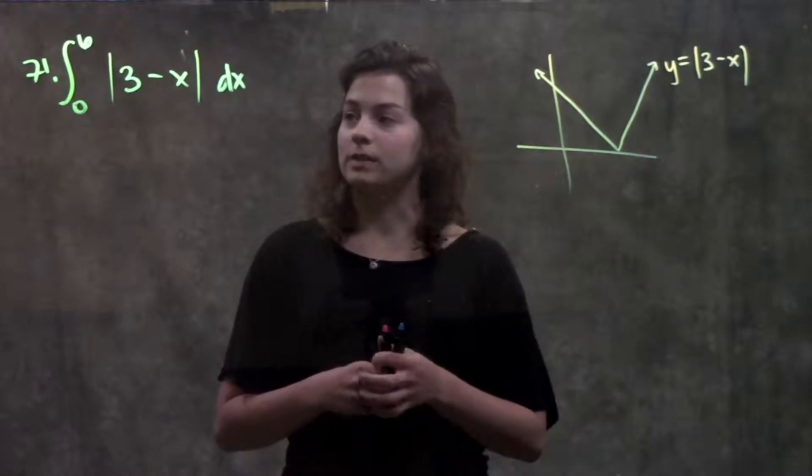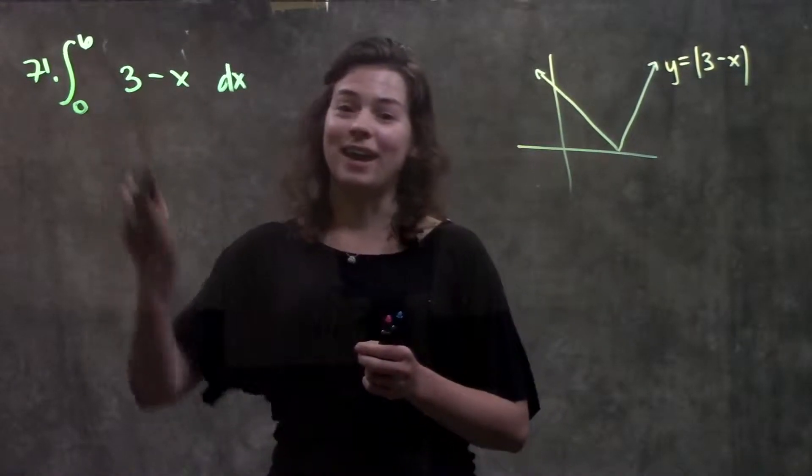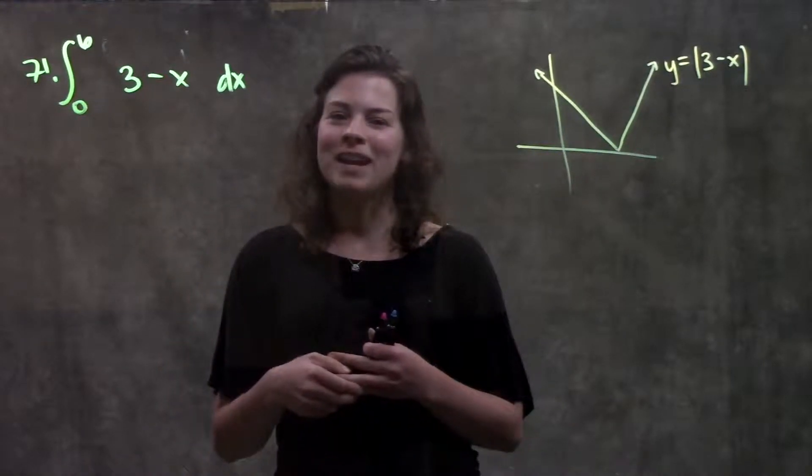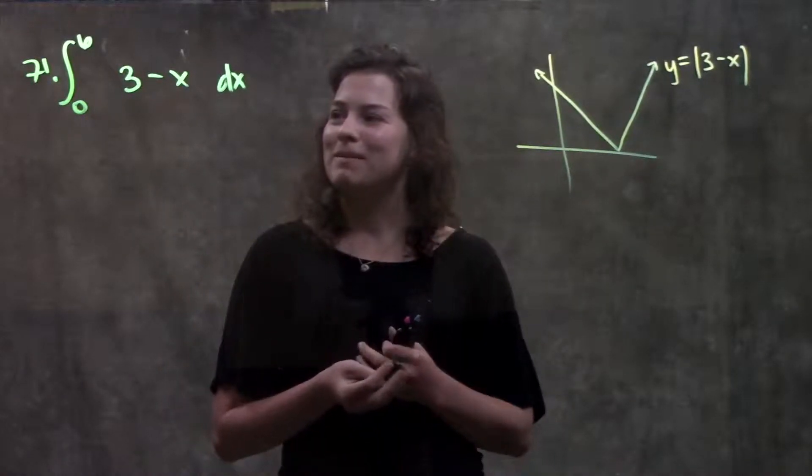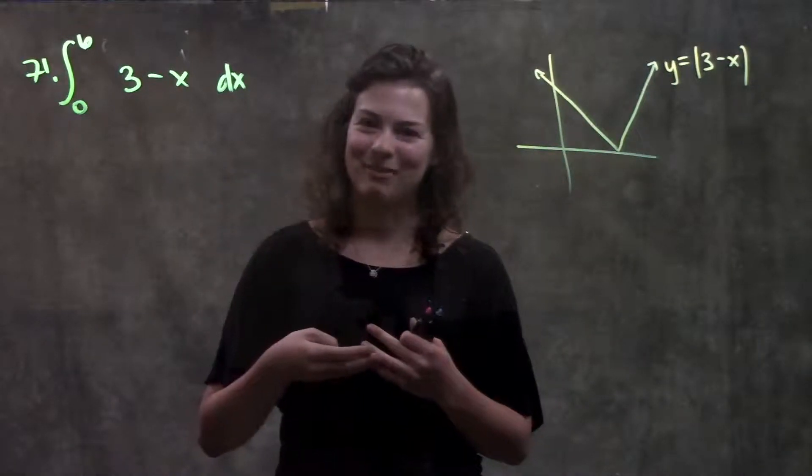So I'm going to look at this problem the same way I look at all my problems, and I'm just going to pretend it's not even there. So I just got rid of my absolute value signs, but unlike in real life where maybe ignoring problems works, here in calculus, that will eventually catch up to you. You need to take care of this problem.